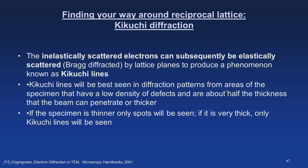Inelastically scattered electrons have lost energy and form a diffuse spot in electron diffraction. When such electrons are further subjected to elastic scattering — Bragg diffraction without further energy loss — they produce Kikuchi lines. Kikuchi lines are best seen in diffraction patterns from areas with low defect density and specimens about half the penetration thickness or thicker. To visualize a Kikuchi pattern, defect density must be minimal and the sample sufficiently thick; otherwise you see a single crystal diffraction pattern. If the specimen is thinner, only spots are seen; if very thick, only Kikuchi lines are seen.